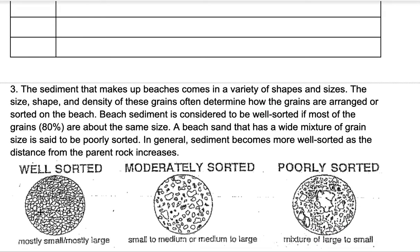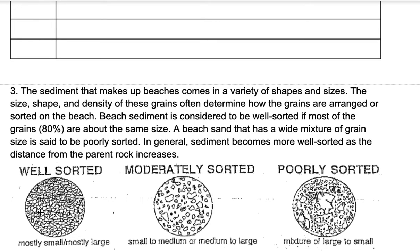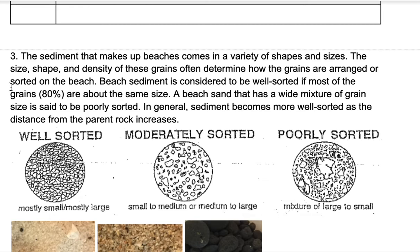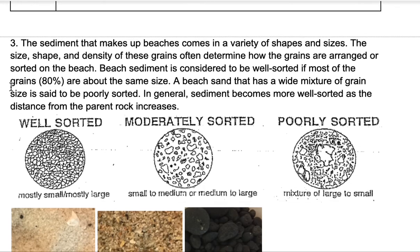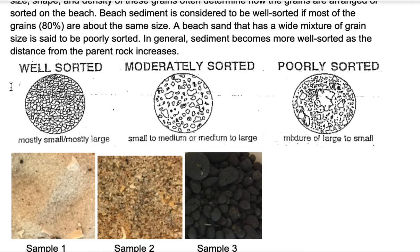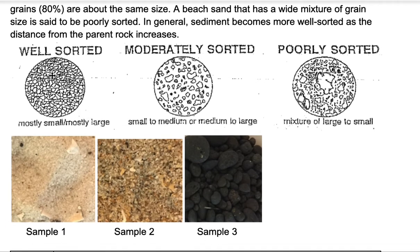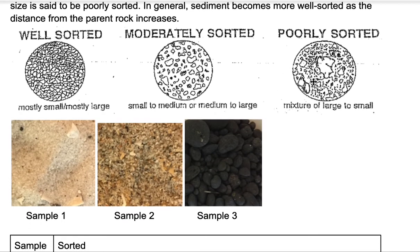The third step is to determine how sorted the samples are. Beach sediment comes in a variety of shapes and sizes, and the size, shape, and density of grains often determine how they are arranged or sorted. A beach is well-sorted if most grains are about the same size. A wide mixture of grain sizes is poorly sorted. In general, sediment becomes more well-sorted as the distance from the parent rock increases.